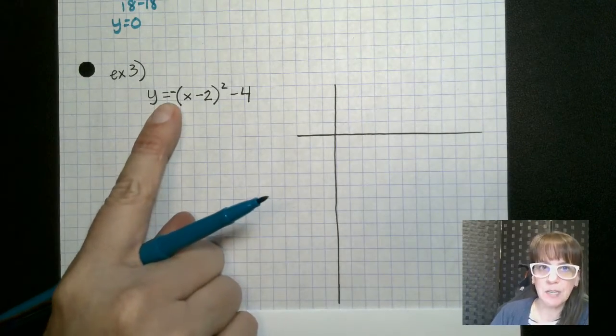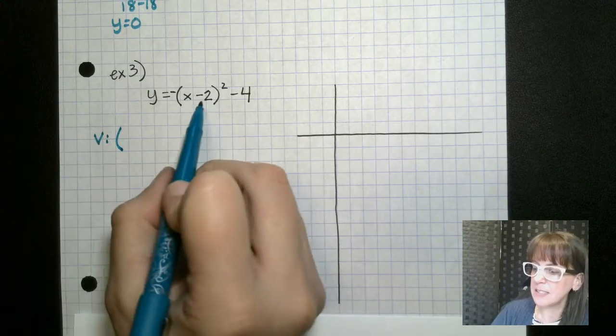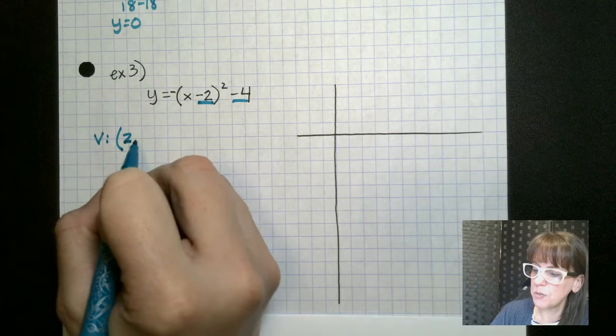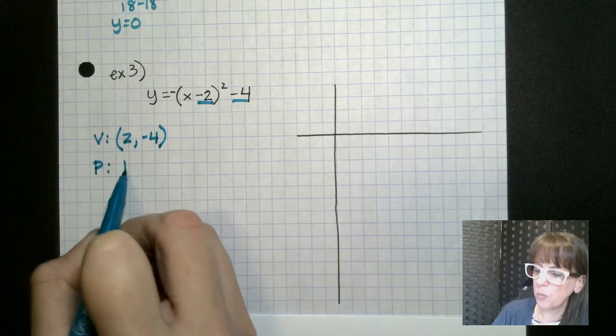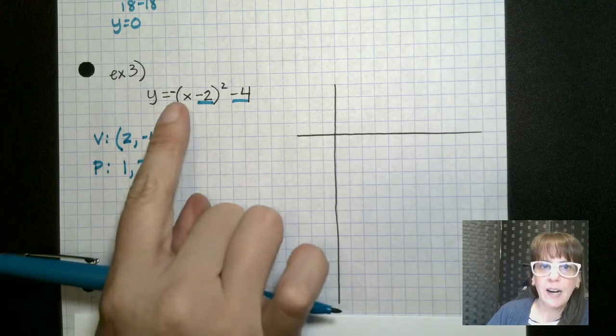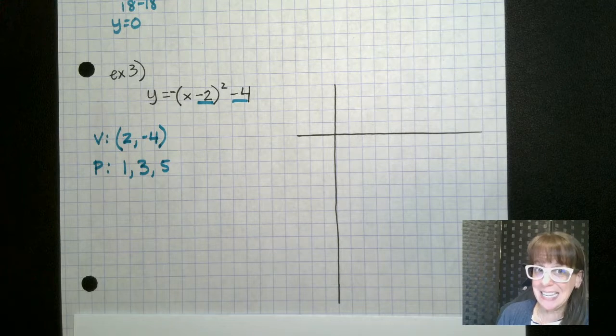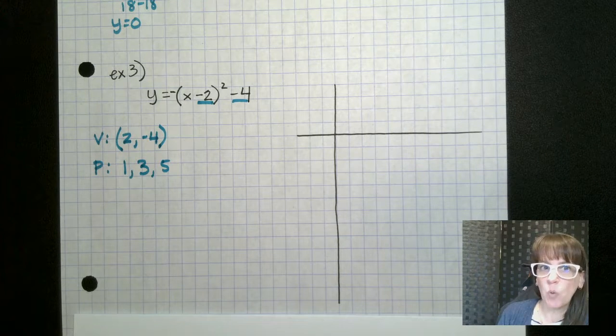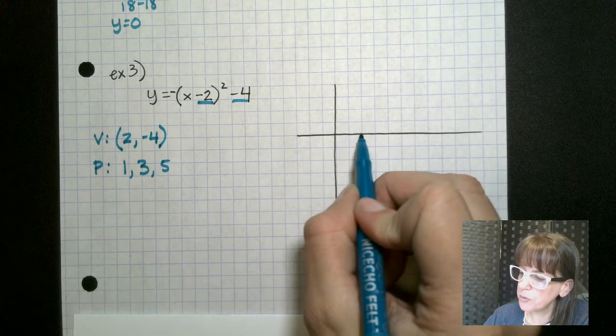All right. So this is a negative, so it's going to be opening down. Our vertex is opposite this guy, regular this. So two comma negative four. Our pattern is one, three, and five. And our a here, the negative just tells us it's opening down. The a is one. So our pattern is going to remain the same one, three, five. So we go over two, down four. And then we open downwards over one, down one, over one, down three.